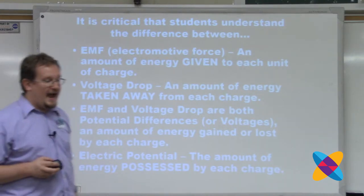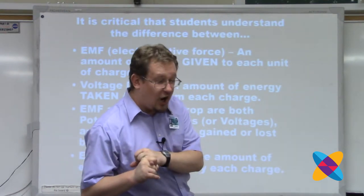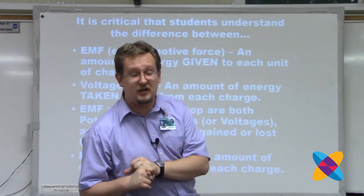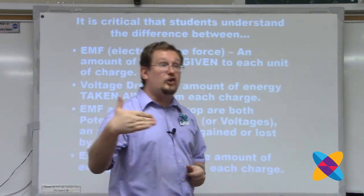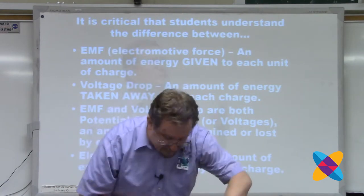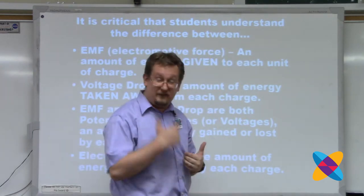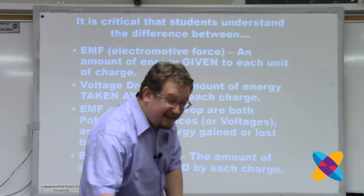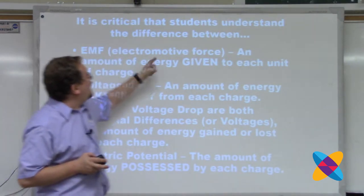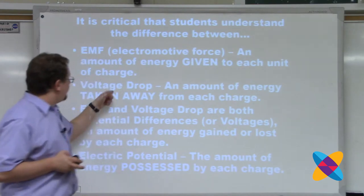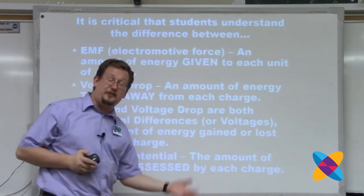If a resistor has a voltage drop of four volts, that means every coulomb that passes through that resistor delivers four joules of energy. I imagine a circuit like a pizza delivery service: the pizza delivery guys drive through a drive-through — like a battery — and receive pizzas, then deliver them to each house. That's the charge delivering energy to different resistors in the circuit. EMF is how many joules each coulomb receives from the battery; voltage drop is how many joules each coulomb gives away to the resistor, the light bulb, or the TV.